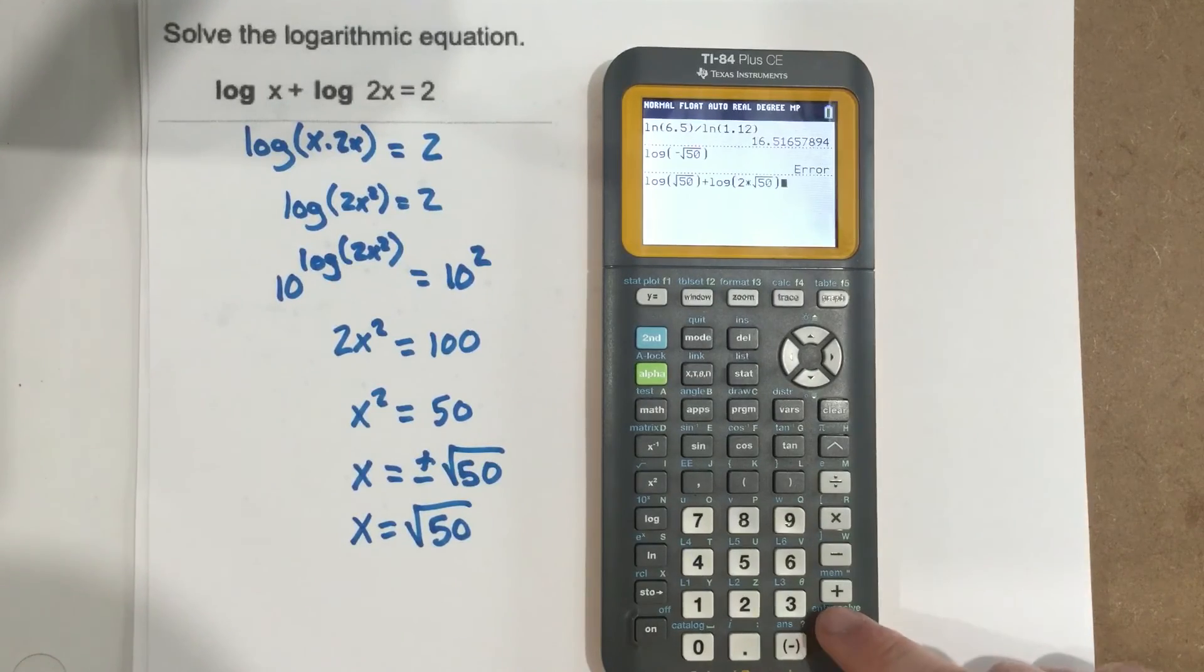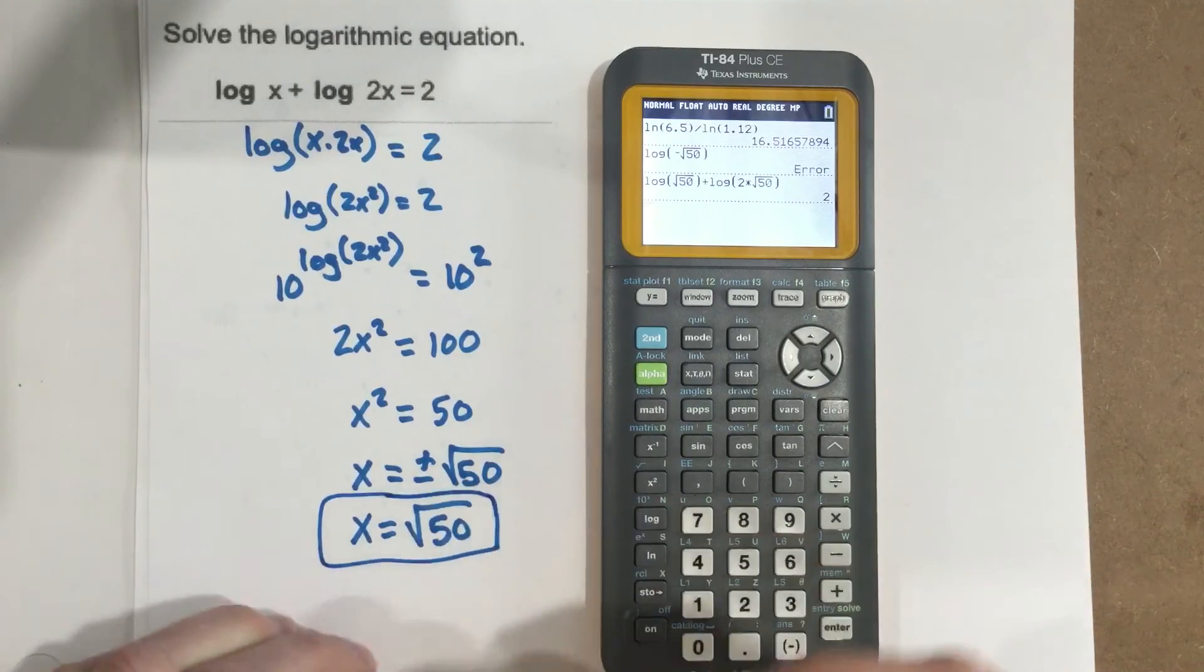If we do log of root 50, and it says to add it with log of 2 times root 50, we should end up with 2. And we do. So root 50 is our solution. We've checked the answer, verified the negative root 50 doesn't work, and we end up with one solution.